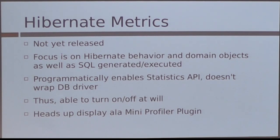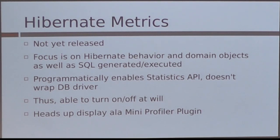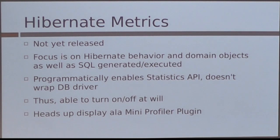The Mini Profiler plugin wraps the data source using the P6Spy JDBC library — it's either on or off for that environment. Whereas this plugin will programmatically enable the statistics API, so theoretically you could turn it on or off as you want. Theoretically you can do it in production. It had some earlier versions where it was nicer to say, 'I want to turn it on and I'm the only one who sees the output,' but currently it isn't in that state.